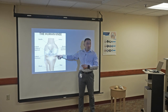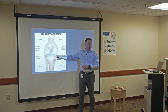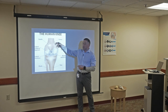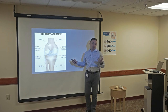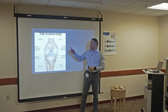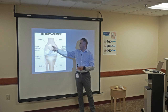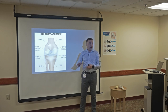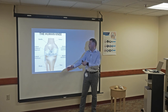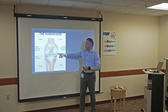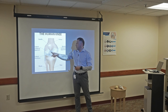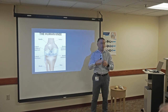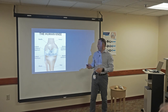In between the two bones, we have the meniscus. You've probably heard a lot about meniscal injury. These are the most important structures in the knee: bones — femur, tibia, and the kneecap — articular cartilage, which is supposed to be shiny, soft, and smooth to allow for movements, ligaments on the outside and inside of the knee, and the meniscus, which lies between the two bones and serves as a cushion.